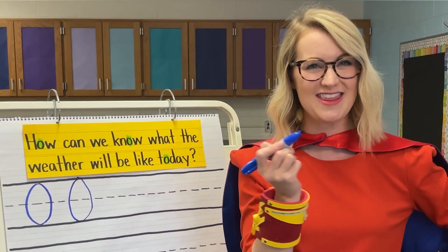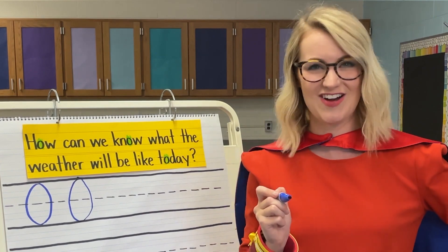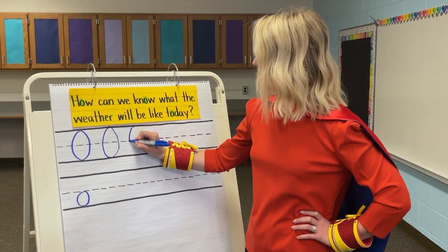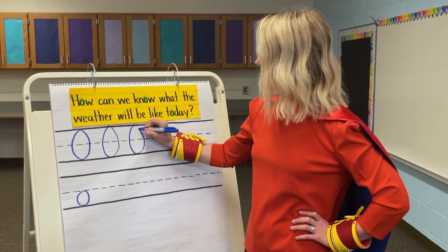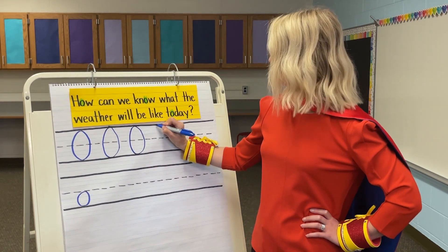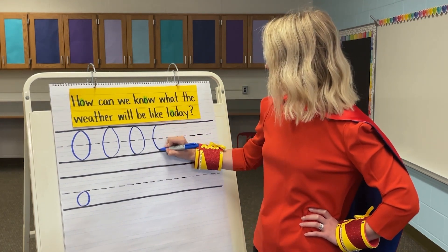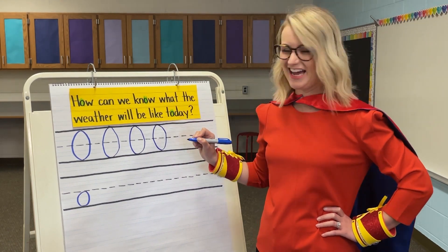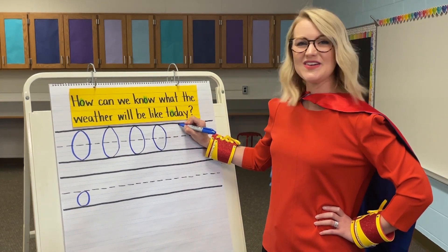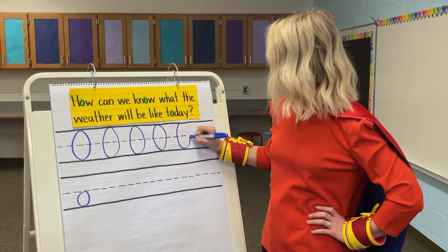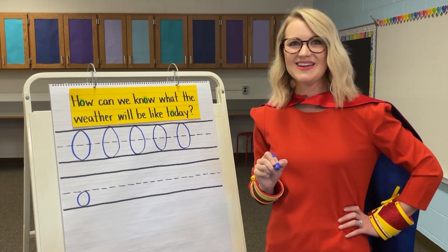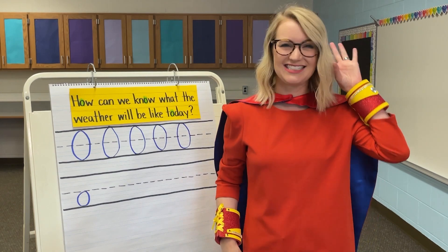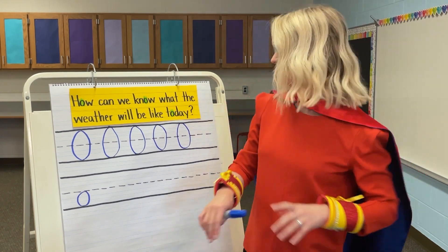Get out something to write with and let's practice writing the letter O. Start at the top, around, down, and back up to the top. Do it again — start at the top, around, down, and back up to the top. One more time — start at the top, around, down, and back up to the top. Great work. What letter did we just write? Yes, uppercase O.